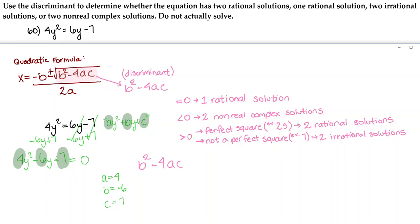Plugging that into our discriminant, we get negative 6 squared minus 4 times 4 times 7. Negative 6 squared is 36, and 4 times 4 times 7 is 112. So we have 36 minus 112, which equals negative 76.